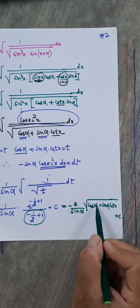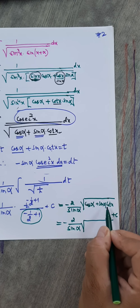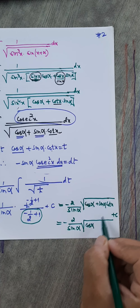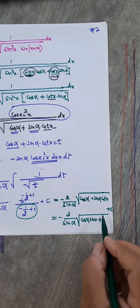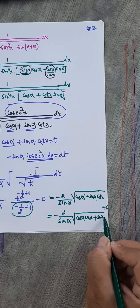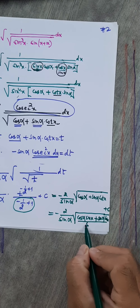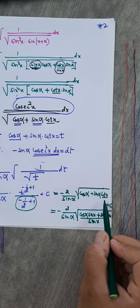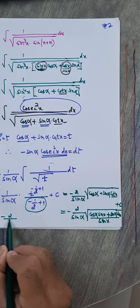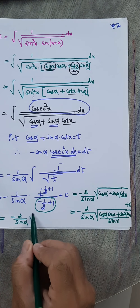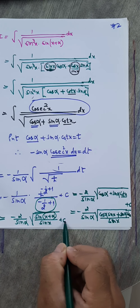So the result is (−2/sin α) times root t plus c. Substituting back t = cos α + sin α · cot x, and writing cot x as cos x / sin x, the numerator becomes cos α · sin x + sin α · cos x = sin(x + α). Therefore the final answer is (−2/sin α) · root[sin(x+α)/sin x] plus c.